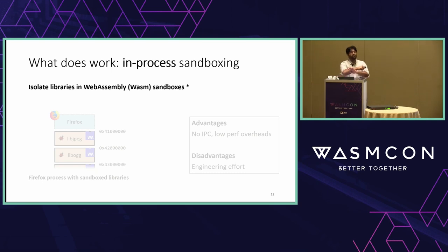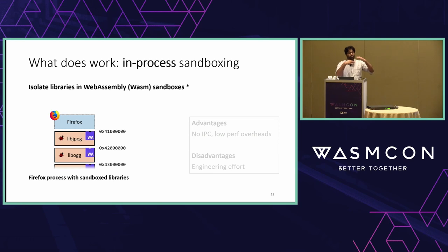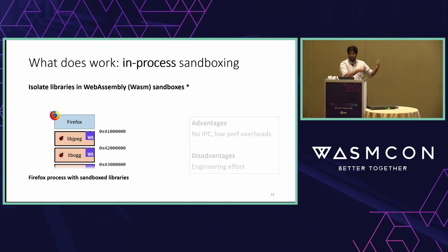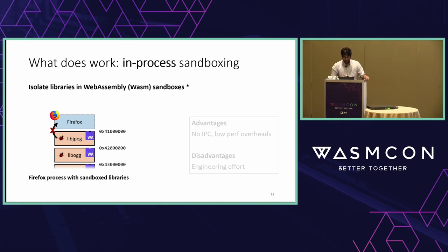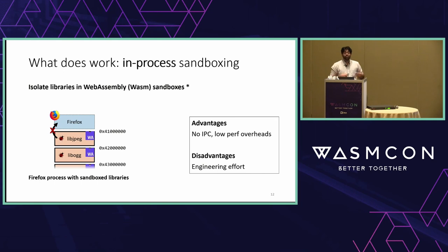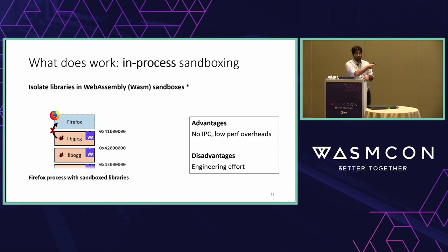What we instead want to do is in-process sandboxing with WebAssembly. Rather than building Firefox as one monolithic binary blob, we want an architecture where different components are isolated — for example, libjpeg isolated to a specific memory range like 0x4100 to 0x4200, separate from everything else. If you have a buffer overflow in libjpeg, it won't affect Firefox — it's contained. The advantage is we get all the security isolation without paying for inter-process communication overhead.